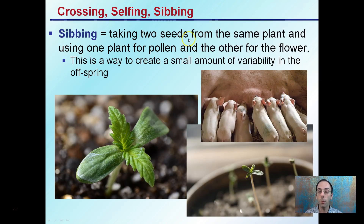Sibbing is taking two seeds from the same individual plant and using one plant for pollen and the other for the flower. This creates a small amount of variability, because both came from the exact same original plant. You're getting some variability, but not a lot. This is useful if you're looking to refine something or select for something more specific.